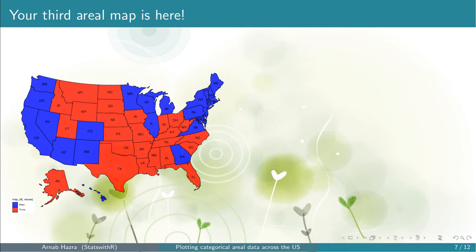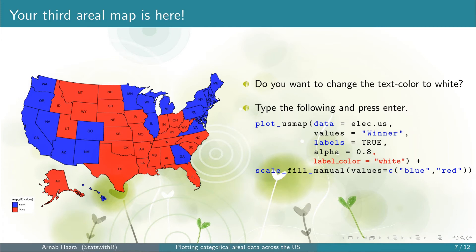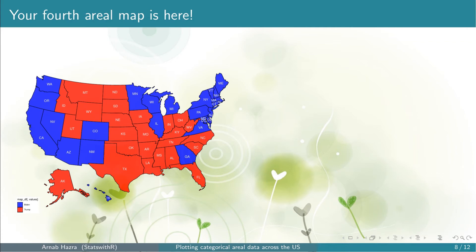You get your third aerial map. You can see that the colors of the map are slightly faded. Next, note that for the red states it is okay to read the abbreviated state names, but for the blue states it is quite hard to see. One option would be to color the state names in white. To do that, add label_color equals to white within quotes inside plot_usmap. If you want a different color, choose accordingly. Now press enter. You get your fourth aerial map. You can see that the state names are in white now and it is much easier to read them.